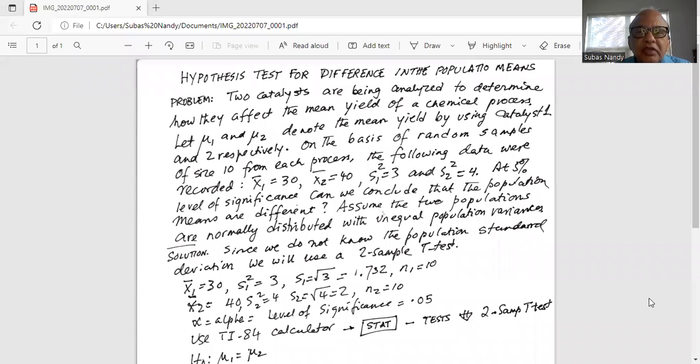Hypothesis test for difference in the population means. Problem: two catalysts are being analyzed to determine how they affect the mean yield of a chemical process. Let mu1 and mu2 denote the mean yield by using catalyst 1 and 2 respectively. On the basis of random samples of size 10 from each process the following data were recorded.